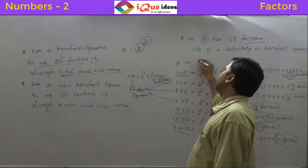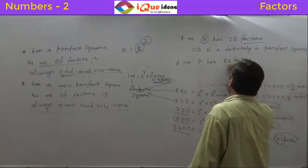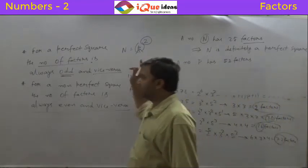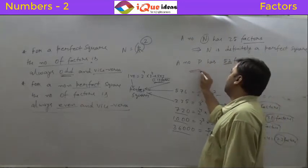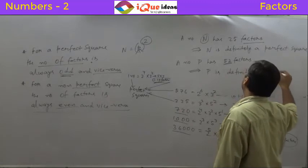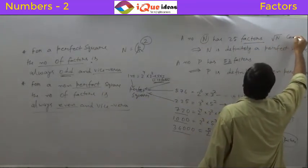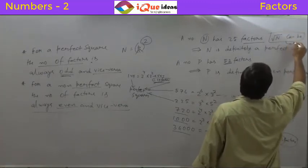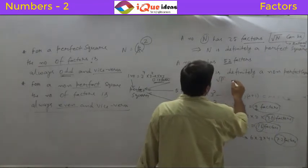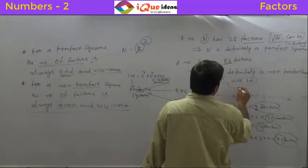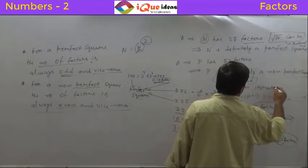Similarly, if a number t has 52 factors, what is that one thing you can definitely say about this number? You can definitely say it is not a perfect square. Why? Because if it was a perfect square, the number of factors should have been odd. For a non-perfect square, the number of factors is even. Here the number of factors is even, hence t is definitely a non-perfect square. The question can be something like: root t can be — and there will be four options. Here root of t will be an irrational number, because t is not a perfect square, so root t will be an irrational number.